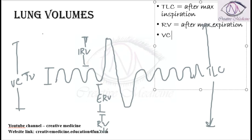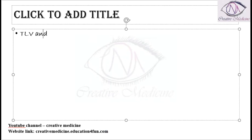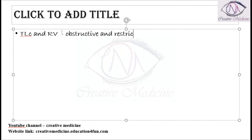Vital capacity is the volume exhaled from maximum inspiration down to residual volume — it is the volume that can be exhaled from the lungs. Total lung capacity and residual volume are very important for distinguishing between obstructive and restrictive patterns of lung disease.